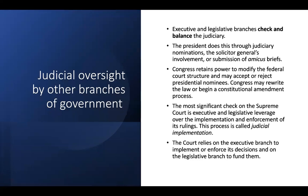There is oversight by other branches of government through checks and balances. The president engages in checks and balances through his nomination power, the work of the Solicitor General, or the submission of amicus briefs. Congress has the power to modify the federal court structure and accept or reject nominees — they could even rewrite a law or begin an amendment process. The most significant check is over the implementation and enforcement of rulings — the court just gives a ruling, it's up to the executive branch to enforce it and the legislative branch to fund it. Some presidents have tried to engage in court packing; the last big instance was under President Roosevelt, and there have been discussions that President Biden might do so, simply because President Trump was able to nominate three justices to the court.